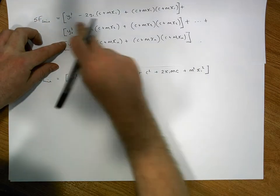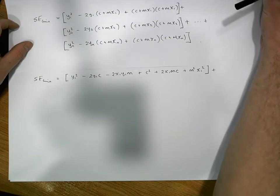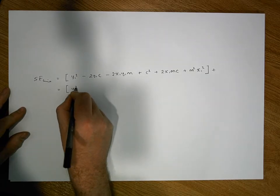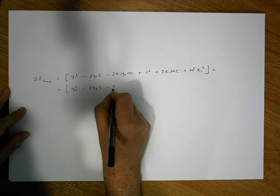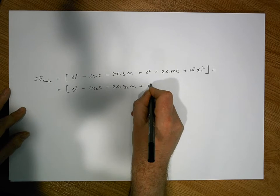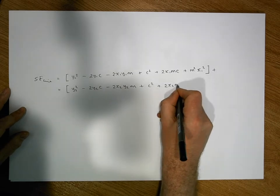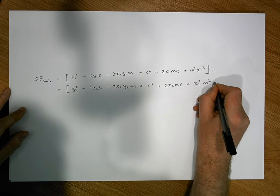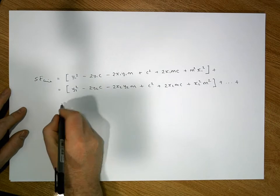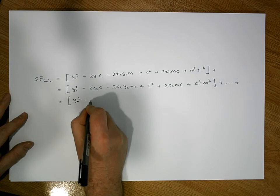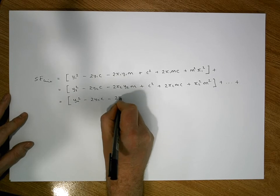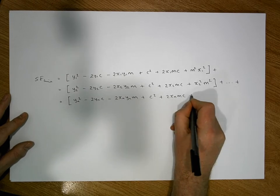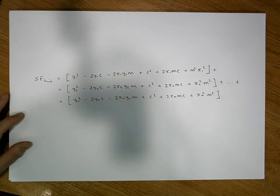We do the same with the next term. Continuing in that fashion, this becomes y2 squared minus 2y2c minus 2x2y2m plus c squared plus 2x2mc plus x2 squared m squared. And we do this all the way through to the nth term, giving yn squared minus 2ync minus 2xnynm plus c squared plus 2xnmc plus xn squared m squared.